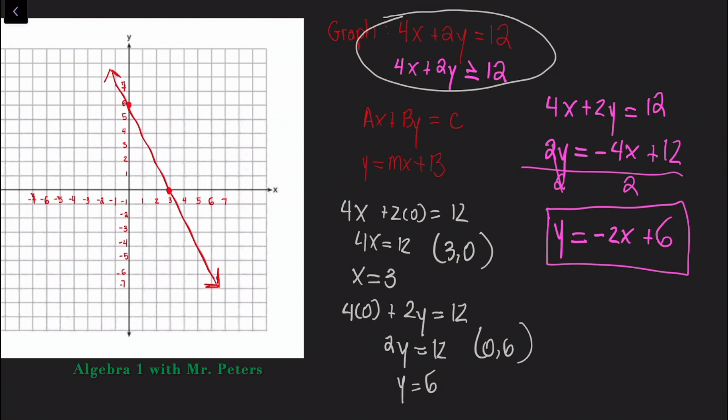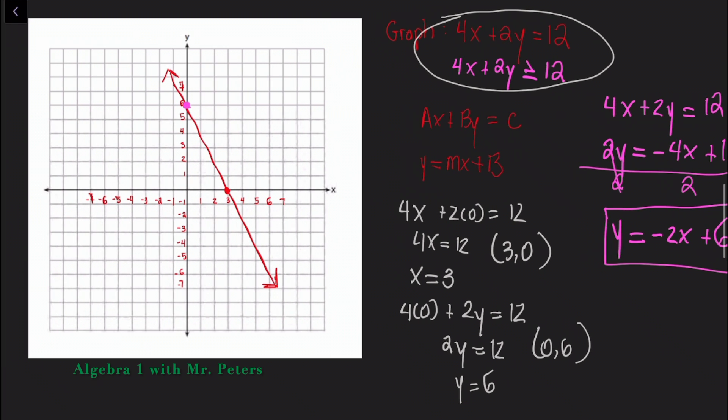So now I have my y-intercept at 6. Slide over some more, have it at 6, and now it's telling me that I'm going to go down 2 over 1. So down 2 over 1, here goes another point. Let's see if I did it one more time to get another point, down 2 over 1. And if you look, those dots are lining up on the line I already drew.